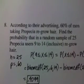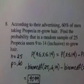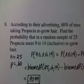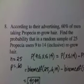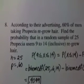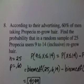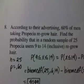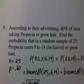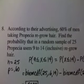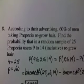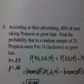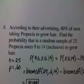Hi guys, this is the UConn staff of Wimlers here again to demonstrate a binomial equation done with one of our calculator programs. The question reads: according to their advertising, 60% of men taking Propecia regrow hair. Find the probability that in a random sample of 25 Propecia users, 9 to 14 inclusive regrow hair.